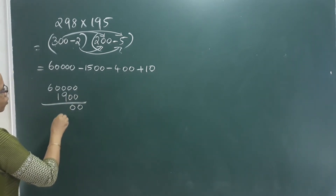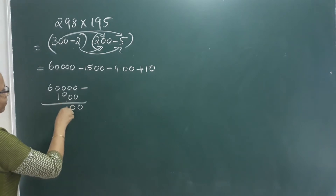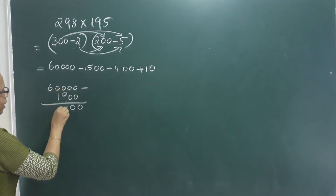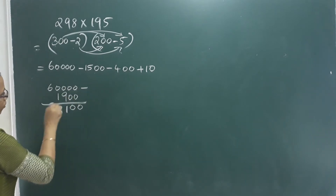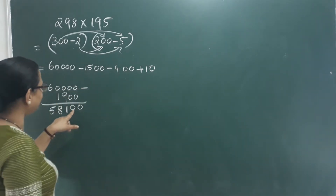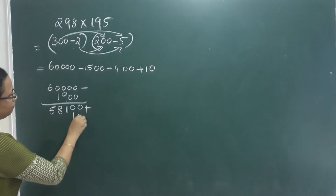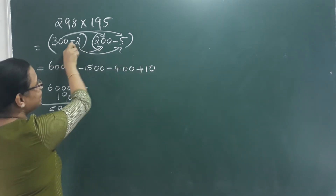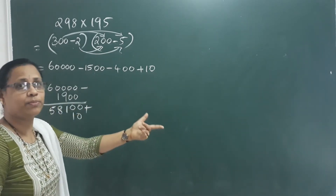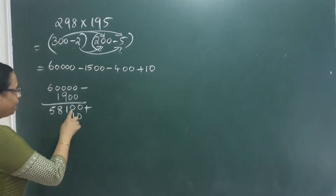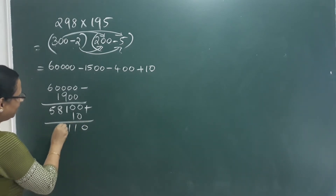So the digits are: 0, 0, minus 10, 10, 1, 9, 8, 5, 5. We have 5, 8, 1, 0, and here is 10. To handle this, we add plus 10, because minus times minus gives plus. So we add plus here and get 0, 1, 1, 8, 1.